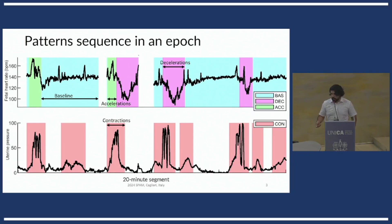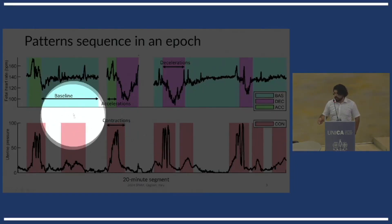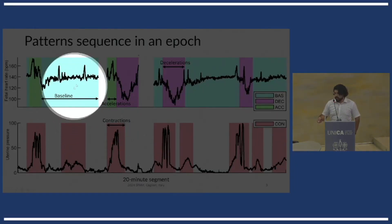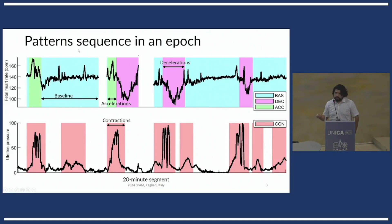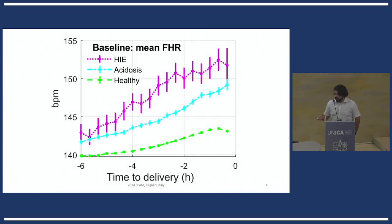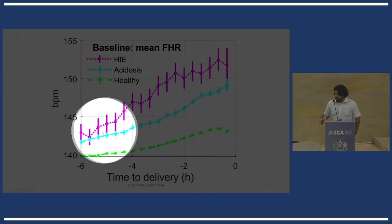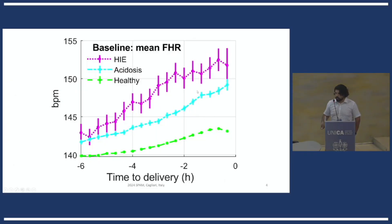So one of these patterns is, for instance, in the baseline to get the baseline level, which is the mean value of the fetal heart rate in this segment. If we look at that as a function of the time before delivery, we can see that there's some evolution in how the baseline level changes during the last six hours of labor.